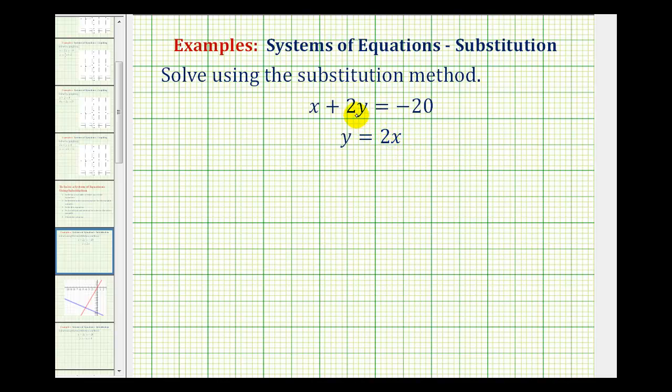We learned when solving systems graphically that it's possible to have one unique solution consisting of one x value and one y value. But it's also possible to have no solutions or even an infinite number of solutions.